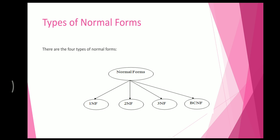There are four types of normal forms: 1st Normal Form (1NF), 2nd Normal Form (2NF), 3rd Normal Form (3NF), and Boyce-Codd Normal Form (BCNF).